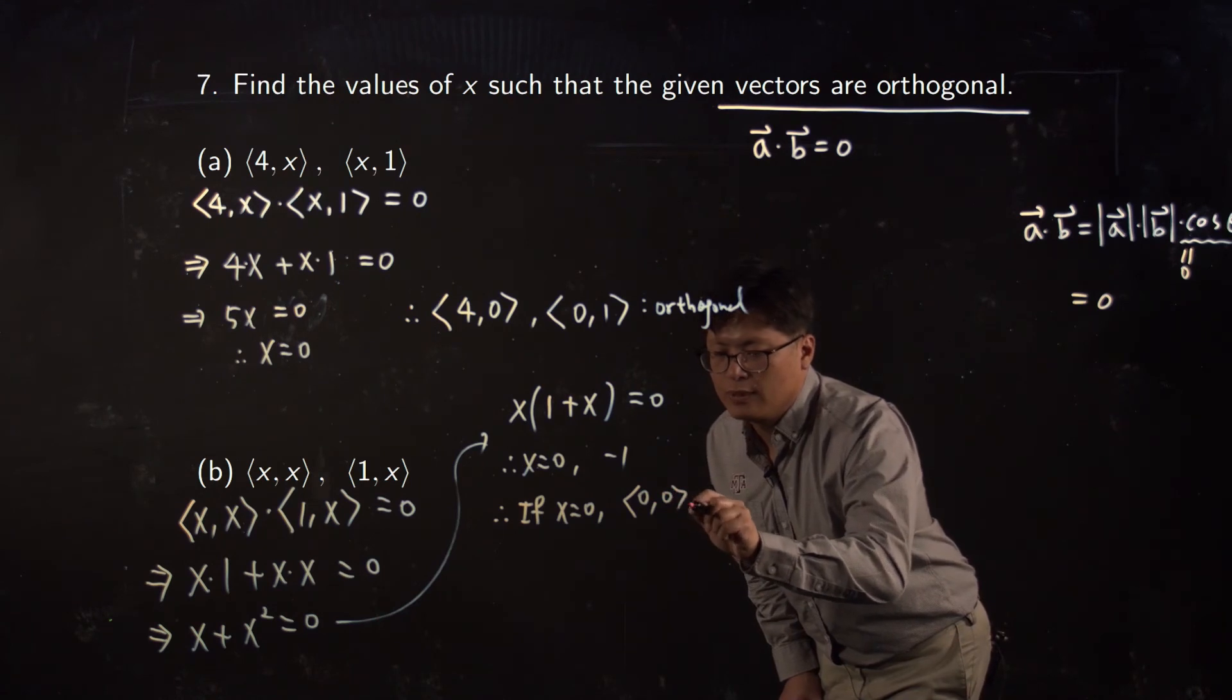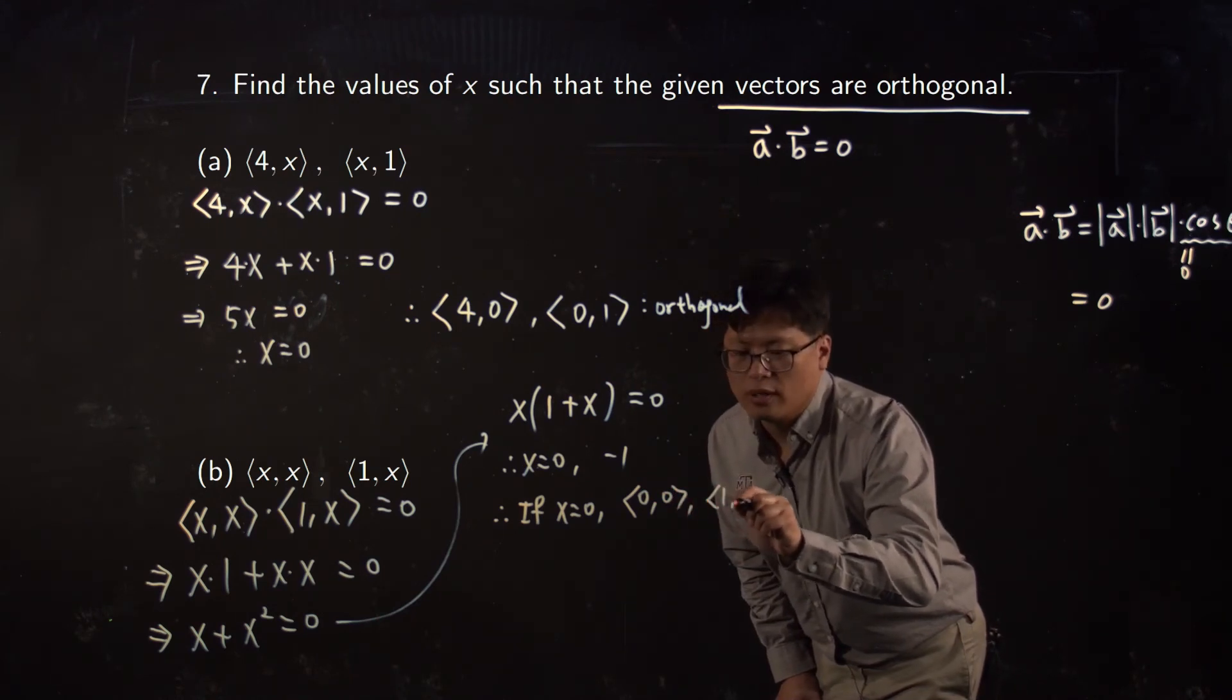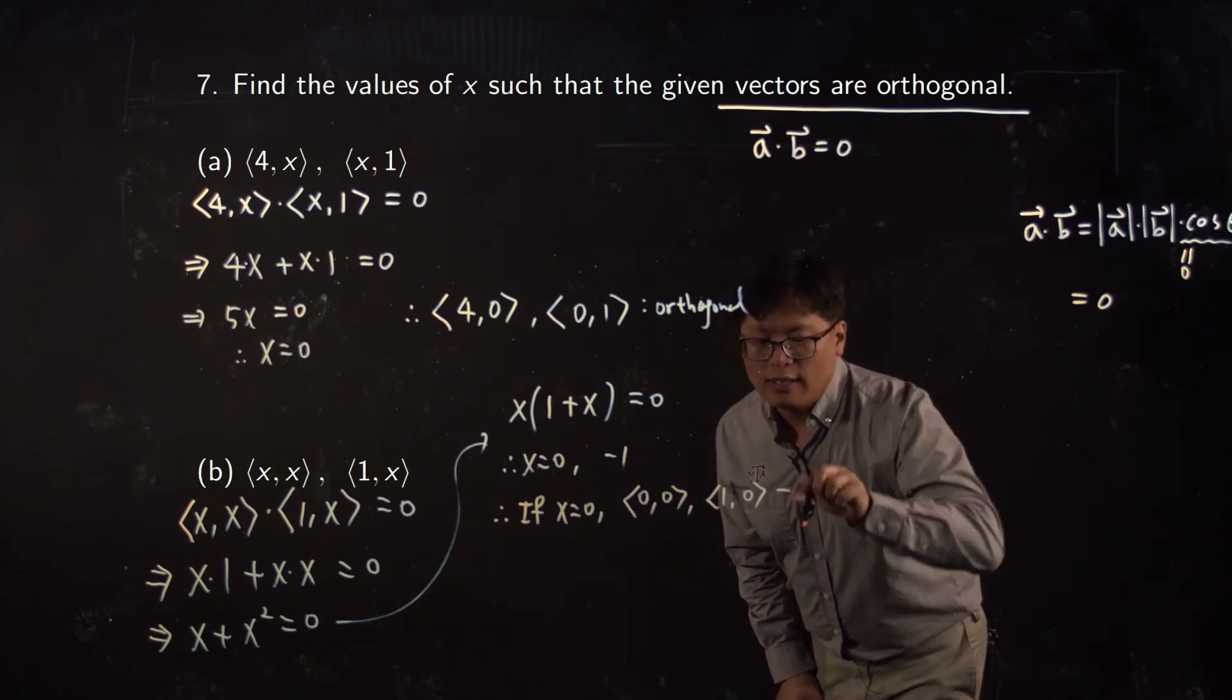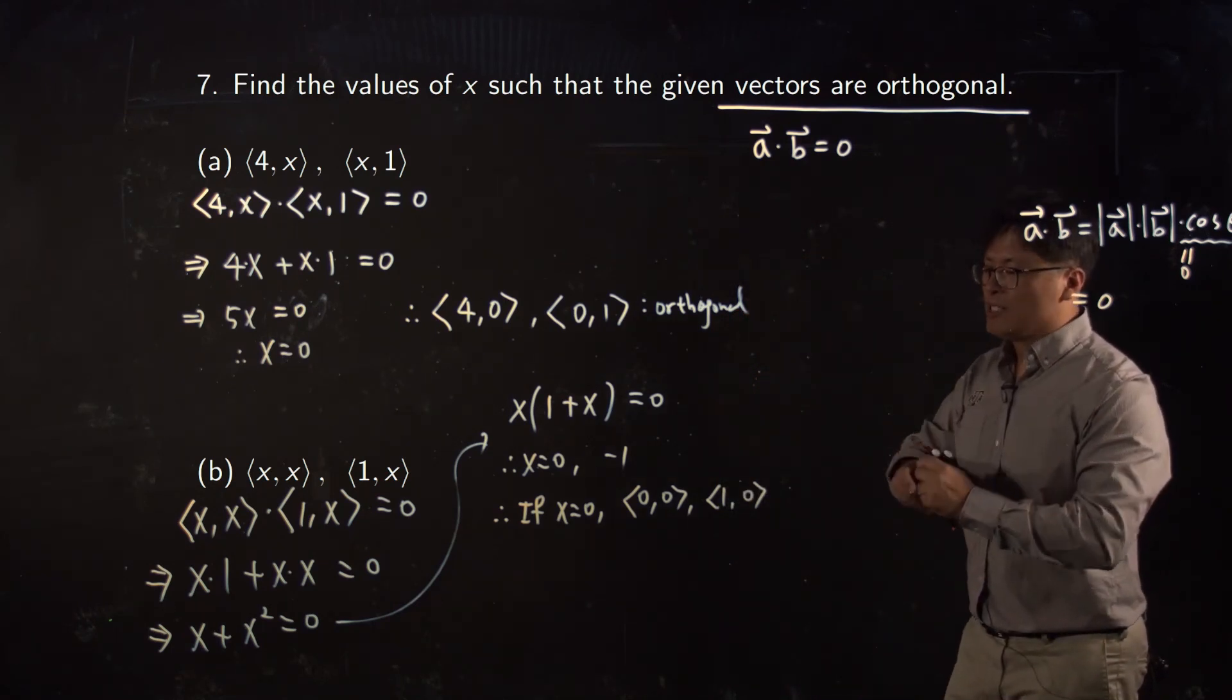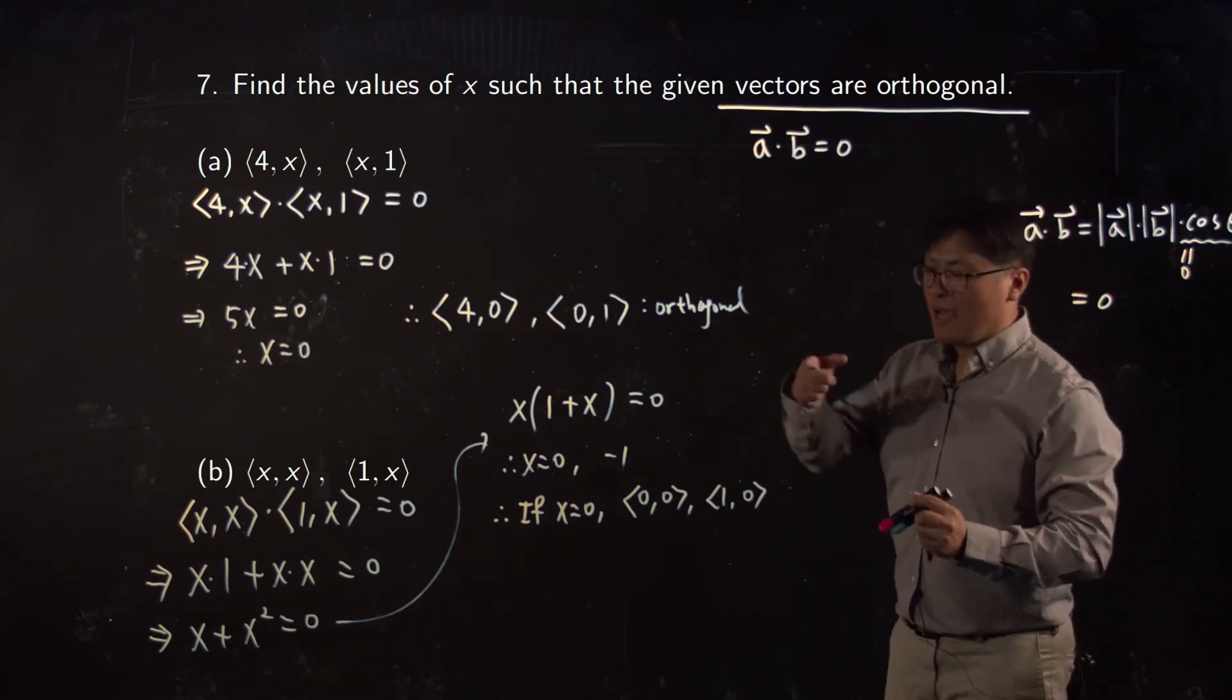Let me give it to you. When x equals zero, then two vectors are (0, 0) and (1, 0). So actually, (0, 0) is the point, and the point